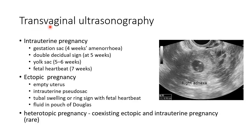Transvaginal ultrasonography is another important investigation in ectopic pregnancy. In case of intrauterine pregnancy, the gestational sac will be visible by four weeks of amenorrhea, the double decidual sign will be visualized at five weeks, the yolk sac will be seen by five to six weeks, and fetal heartbeat will be visible by seven weeks. In case of ectopic pregnancy, there will be an empty uterus, intrauterine pseudosac, or tubal swelling or ring sign with fetal heartbeat. This picture shows tubal swelling or ring sign. Another important finding in ectopic pregnancy is fluid in the pouch of Douglas.